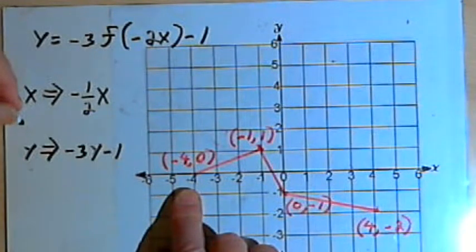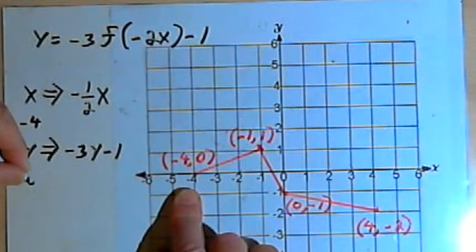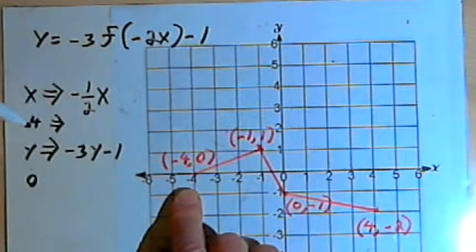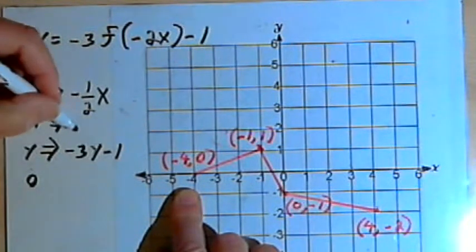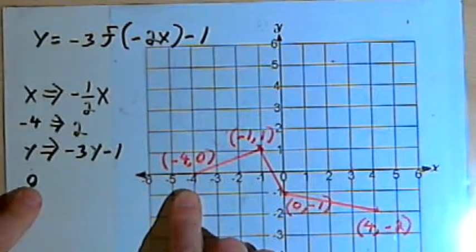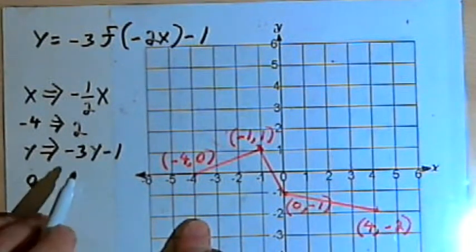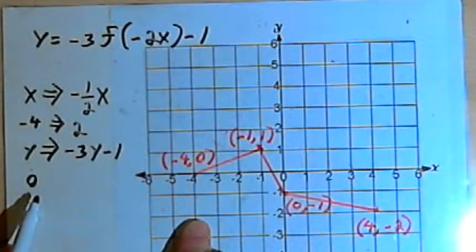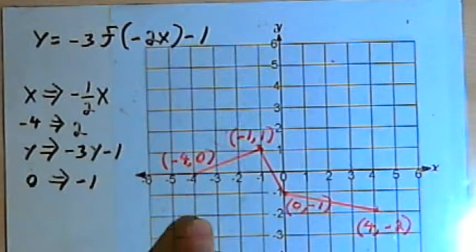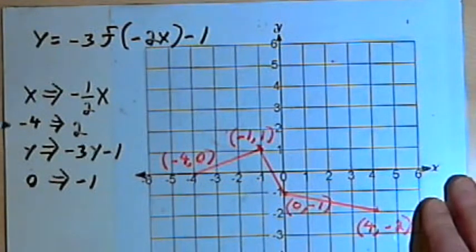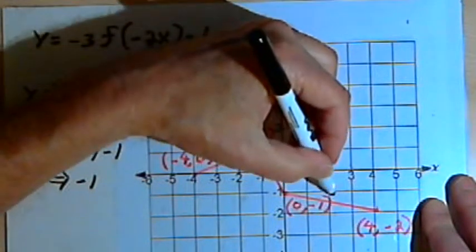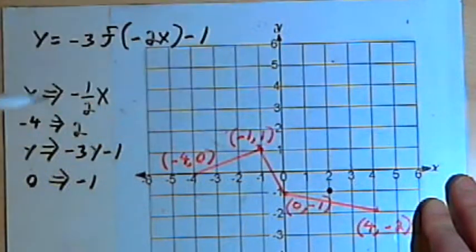There's the point negative 4, 0. The x-coordinate, negative 4, is going to get multiplied by negative one half — that will make it positive 2. The y-coordinate, 0, is going to get multiplied by negative 3, that's still 0, and then 1 will be subtracted, so it becomes negative 1. So I should have a point at 2, negative 1. There's 2 and there's negative 1.